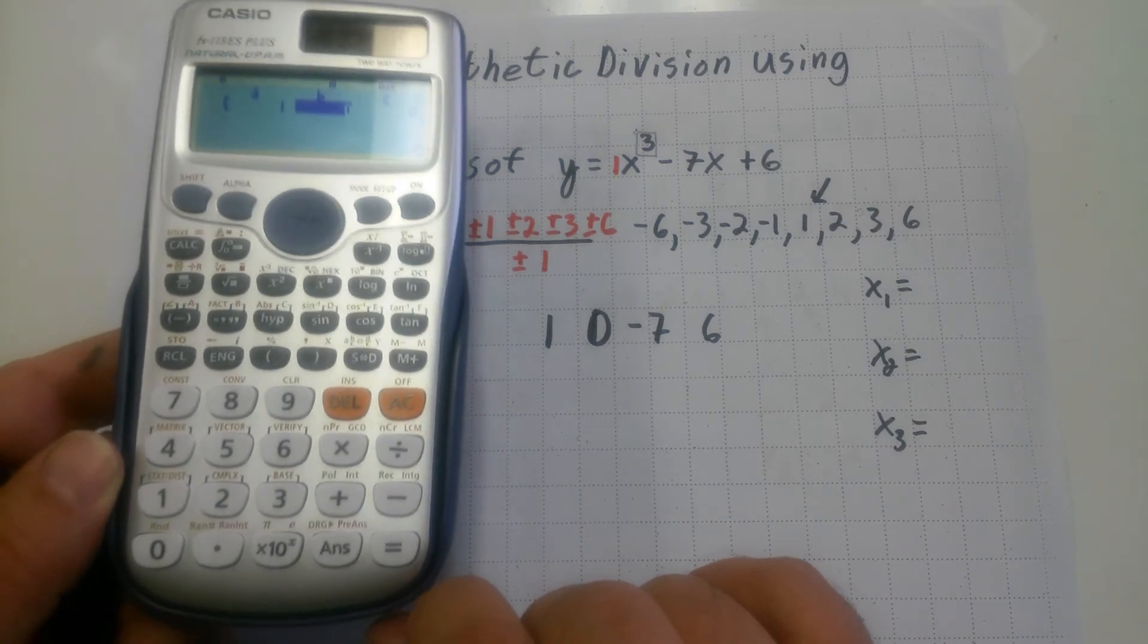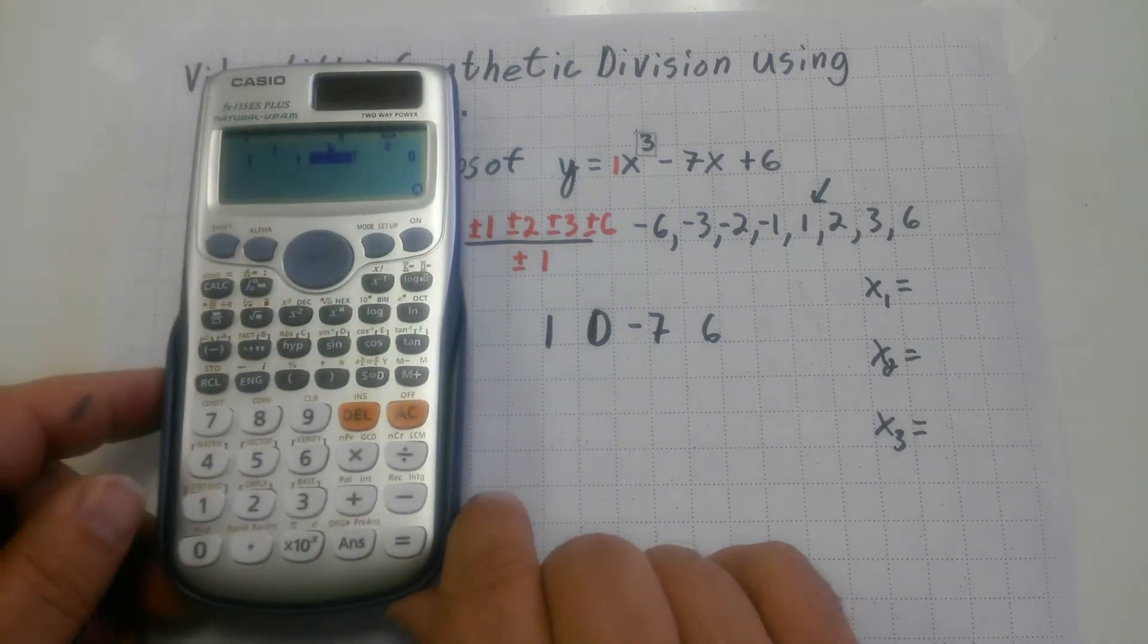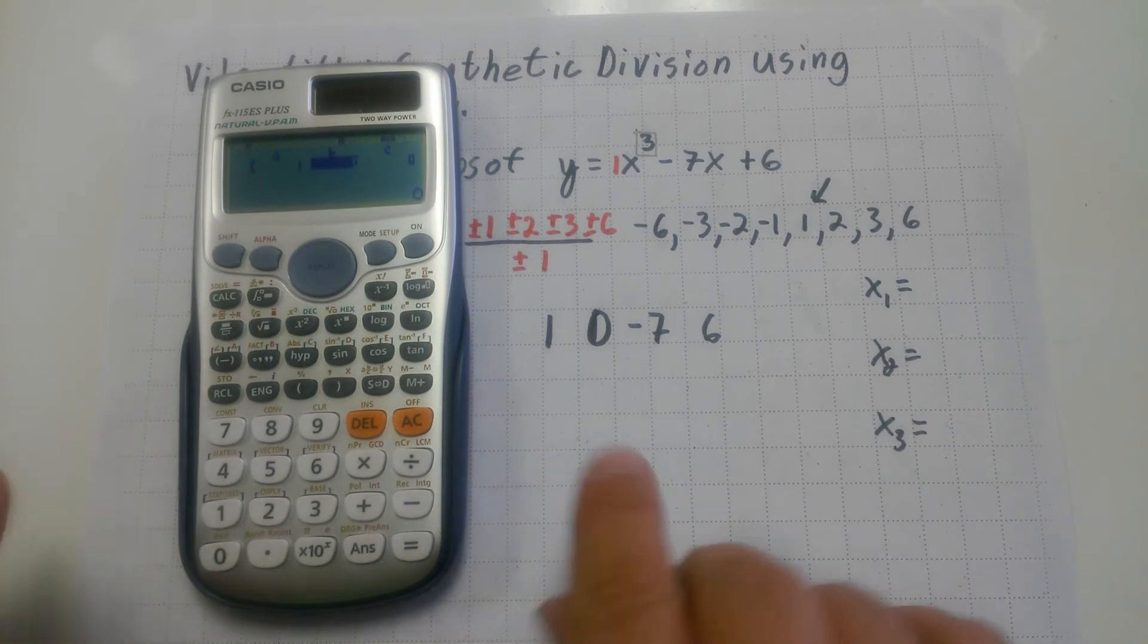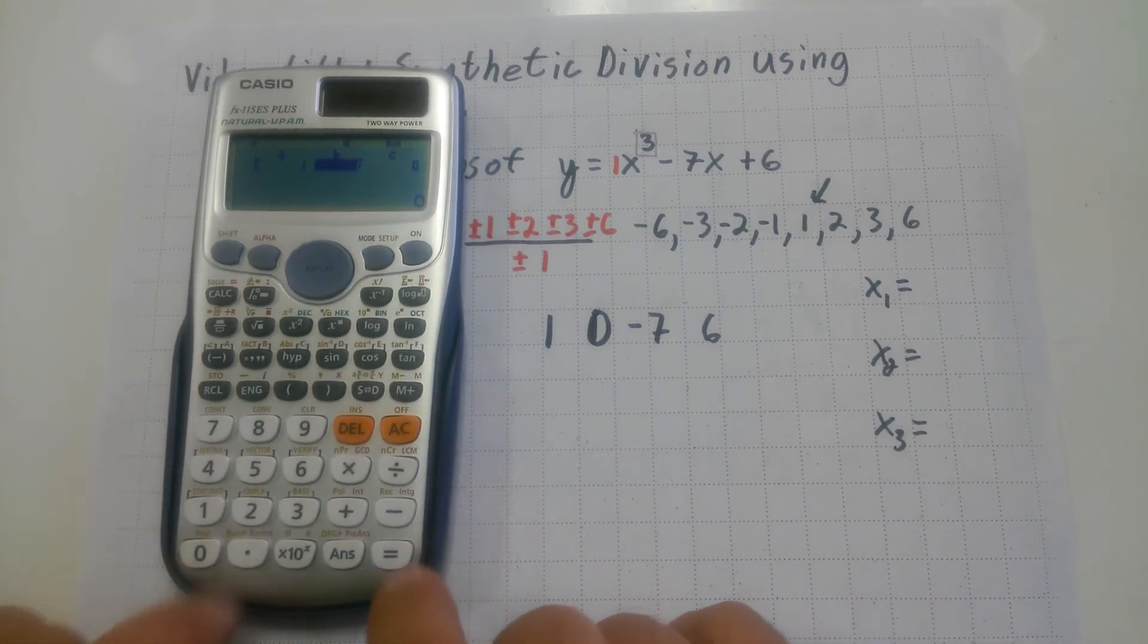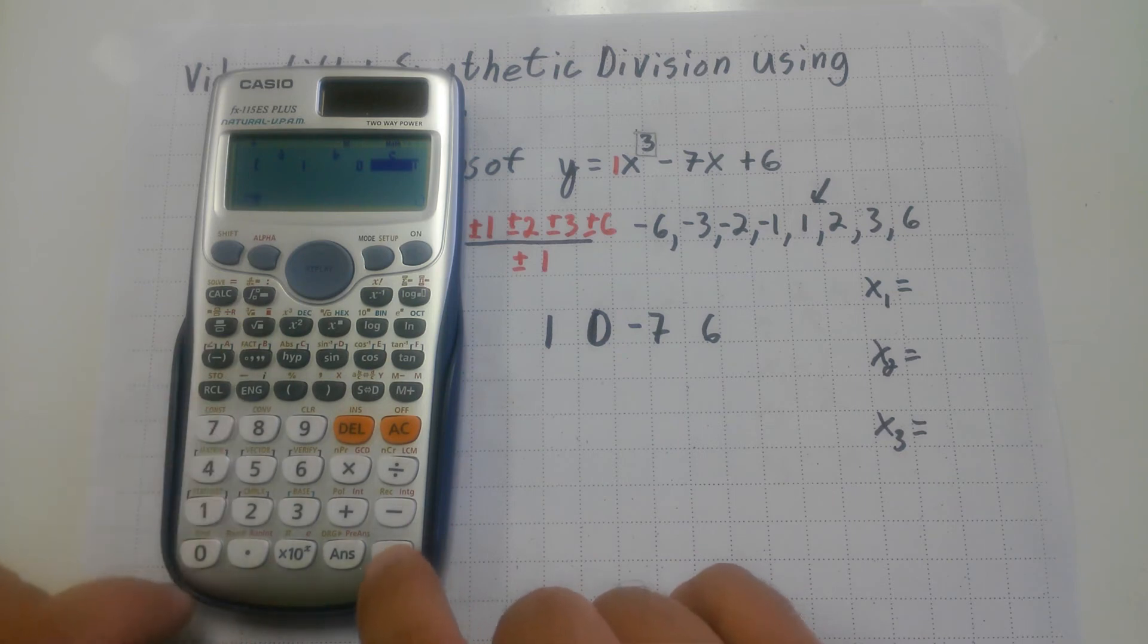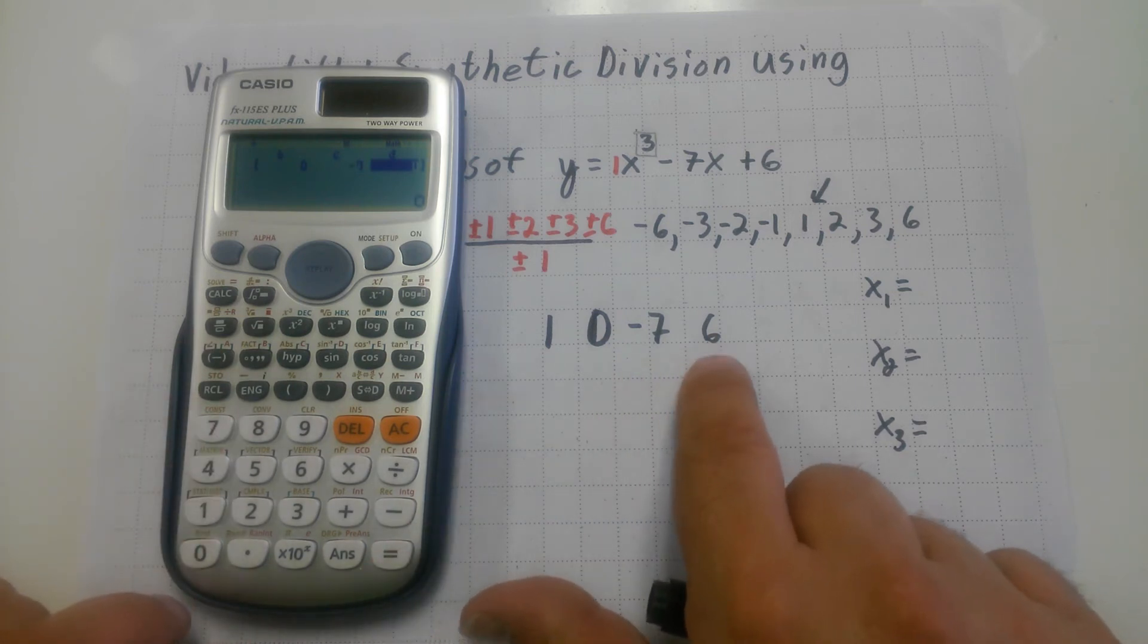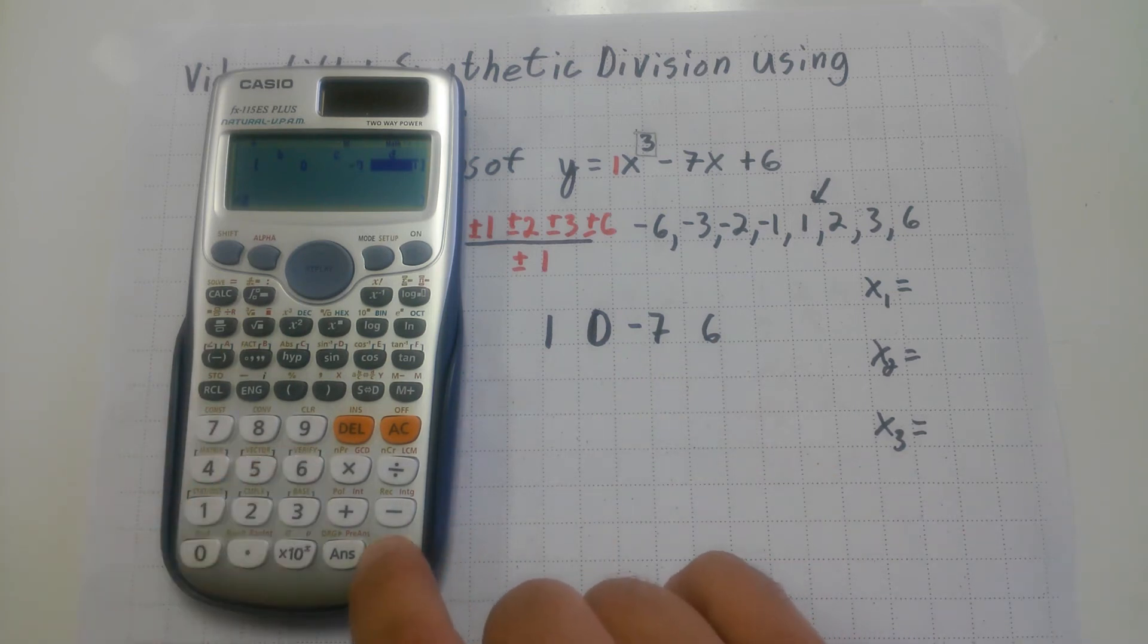Now, if I had done this incorrectly, and I didn't put that zero there, it would have given me the wrong answer. So I'm going to hit zero equals, negative seven equals, and it slides over and asks me for the last term, six equals.